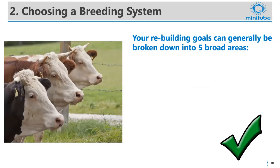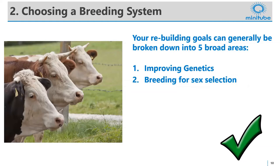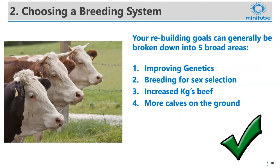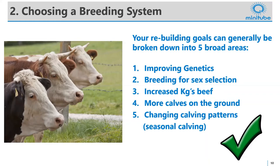When choosing a breeding system for herd rebuilding, I've condensed the objectives down into five broad areas to consider. The first is using rebuilding as an opportunity to improve your genetics. You may also be considering breeding for sex selection — do you want more replacement heifers or more bulls, perhaps on a contract? Do you want to increase kilograms of beef turned off? Do you want to put more calves on the ground quickly to build numbers fast? And lastly, do you want to change your calving pattern — perhaps moving from year-round to seasonal, or shifting your seasonal calving to a different time of year?